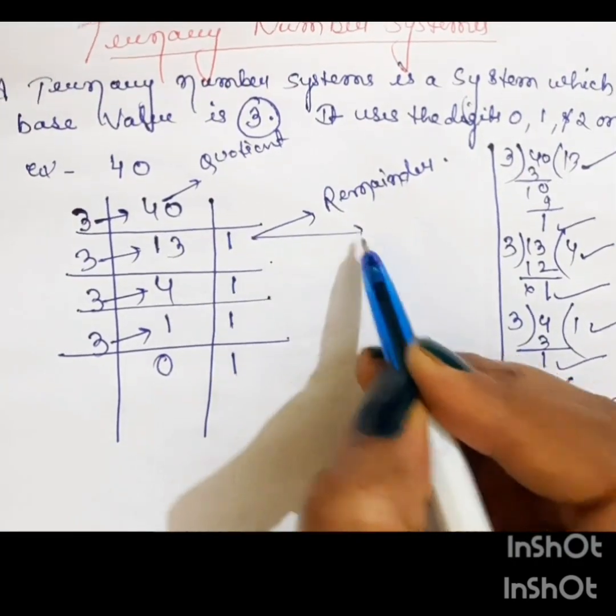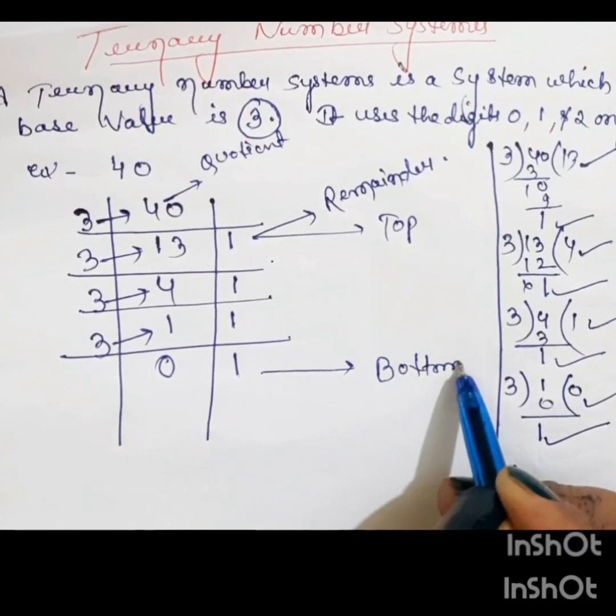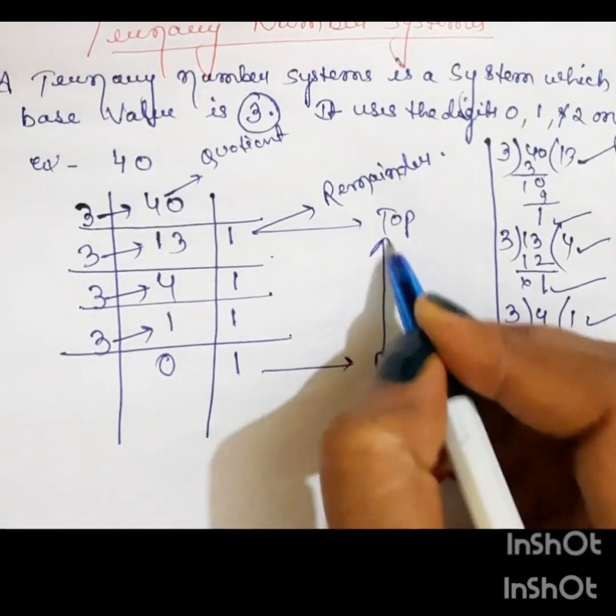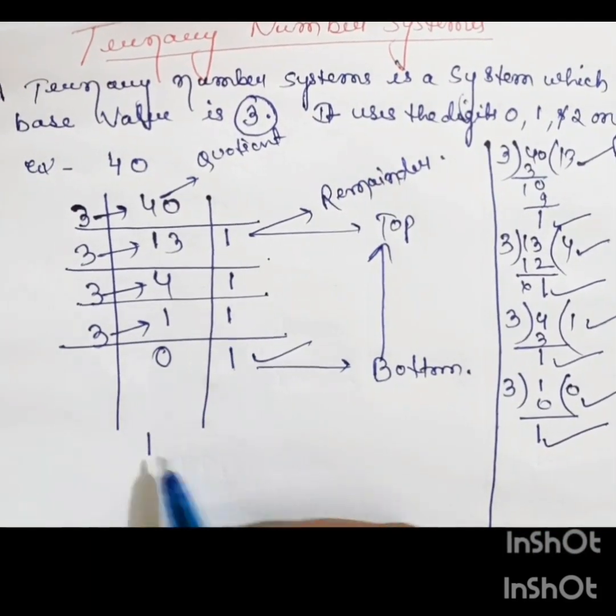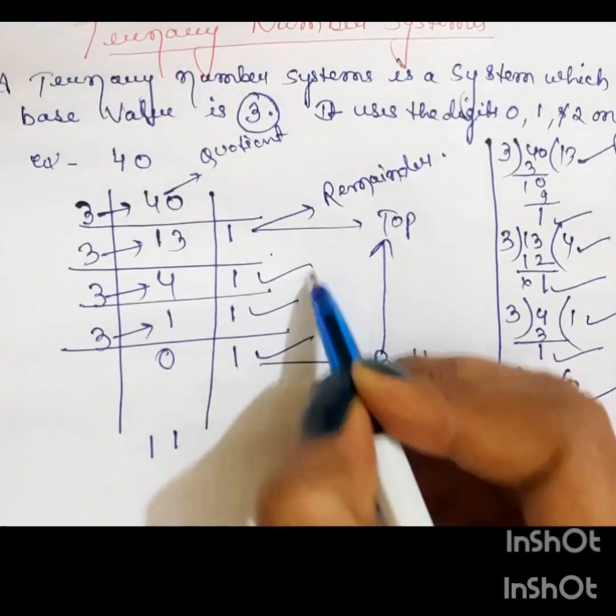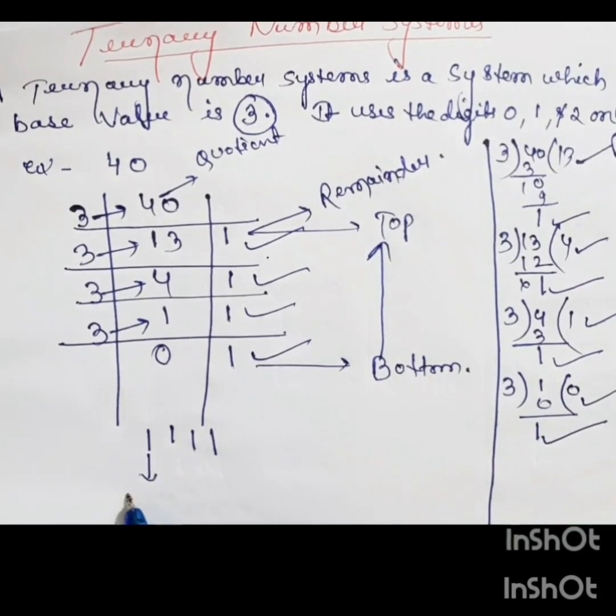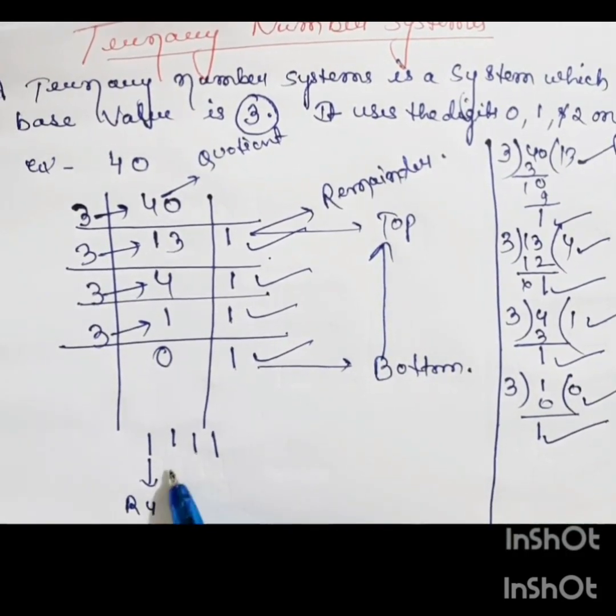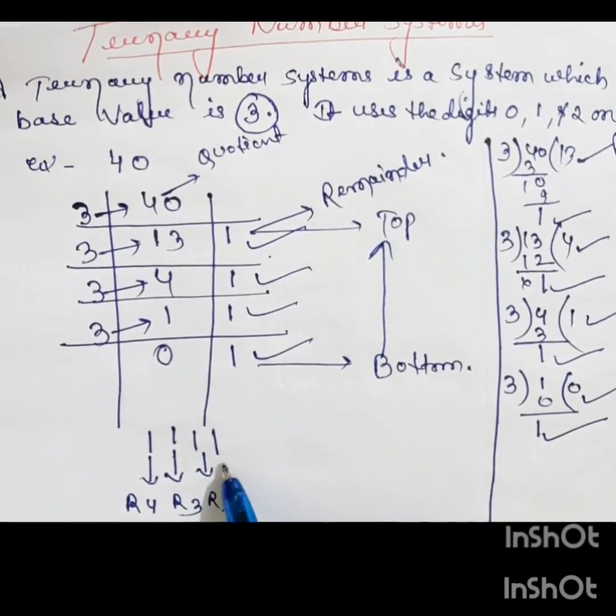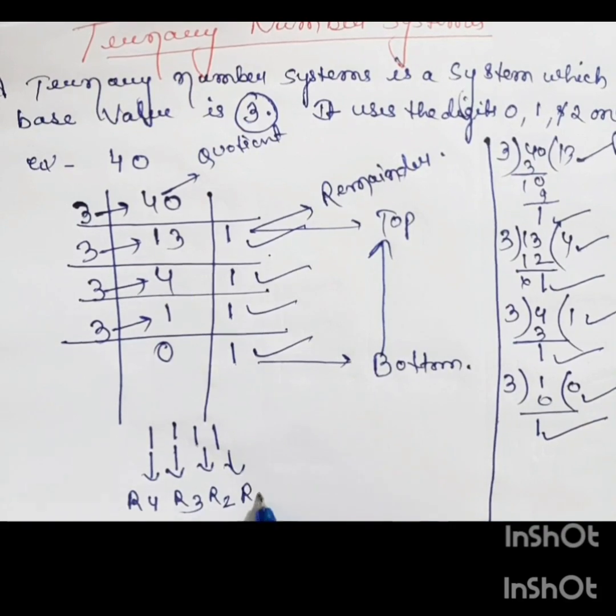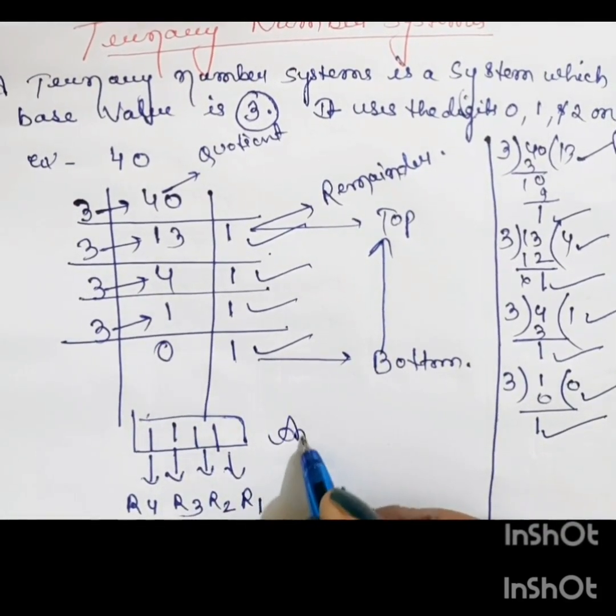This one top. This one bottom. Answer will bottom to top. 1, 1, 1, 1. 1 is remainder 4. Again, 1 is remainder 3rd. Remainder 2. Remainder 1. This will be the answer.